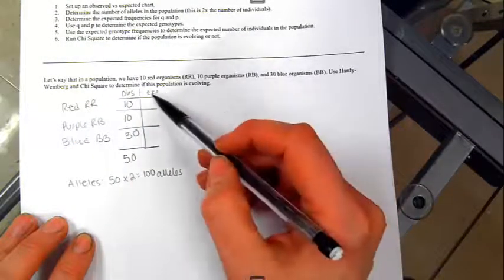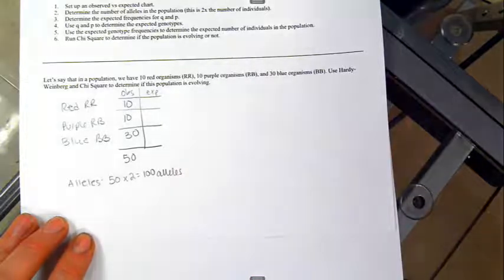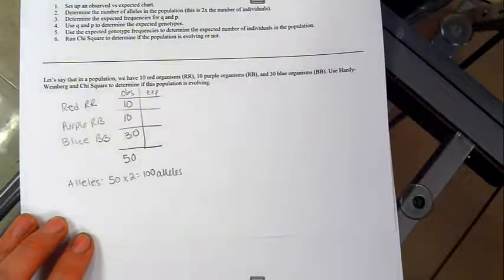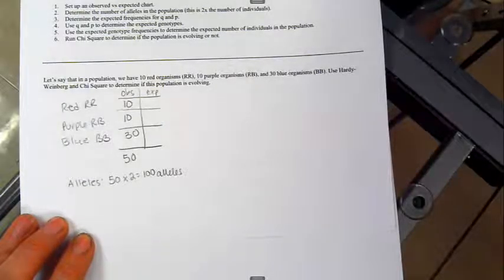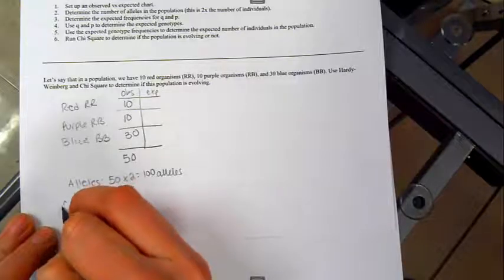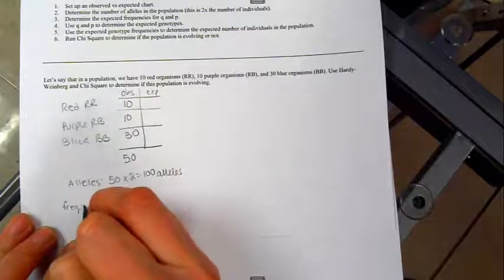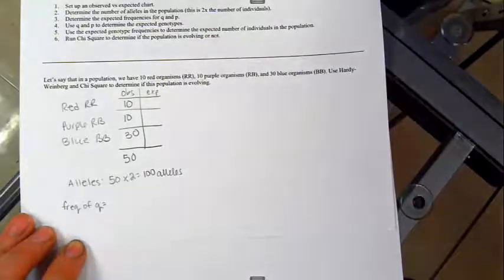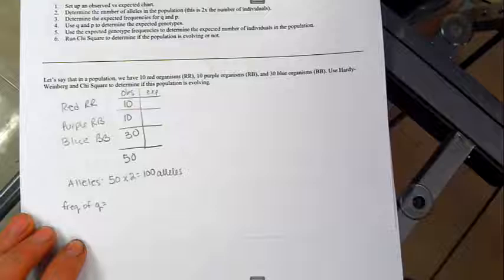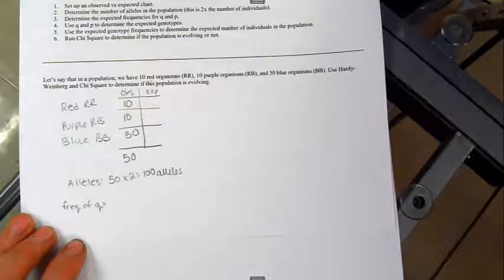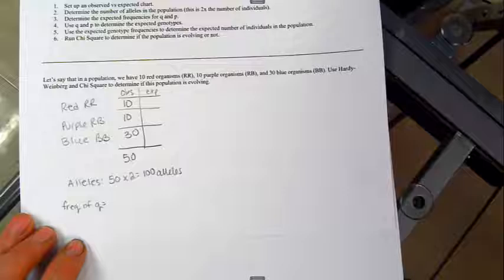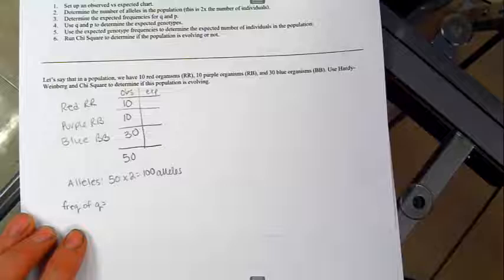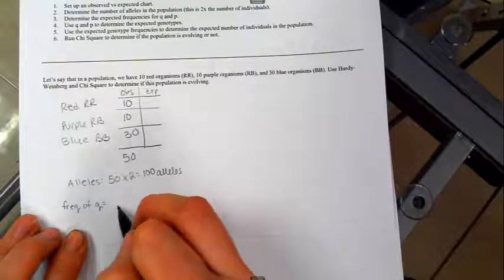Now this is where a lot of people get stuck, is how do we figure out what the heck is expected here in order to solve this problem? So we need to, step 3, determine the expected frequencies for Q and P. So I'm going to start with Q. Now technically, because this is an incompletely dominant trait, you could start with P or Q. If that confuses you, just start with Q, like normal. So let's just jump in right with Q. Q, the frequency of Q.